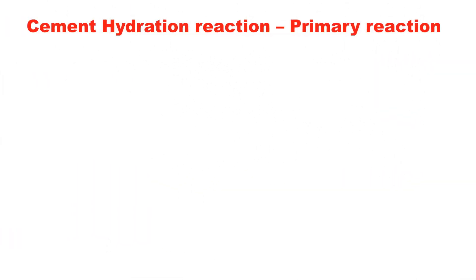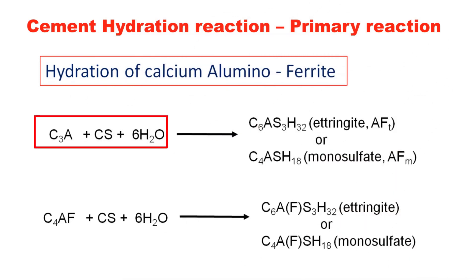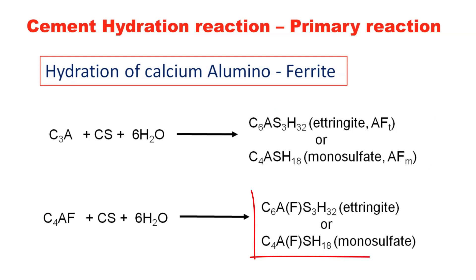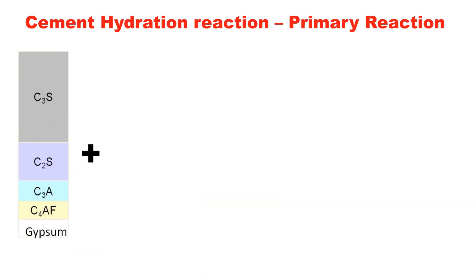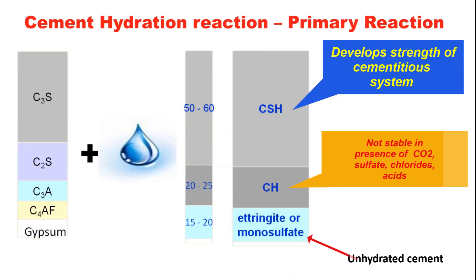For the aluminate components: C3A and calcium sulphate react with water to form ettringite or monosulphate. Similarly, C4AF and gypsum (calcium sulphate) react in the presence of water to form ettringite and monosulphate, with some iron-bearing hydration products. If ettringite forms in the fresh stage there is no problem, but if it forms after the concrete has hardened, it leads to cracking. Additionally, if monosulphate reacts with external sulphate later, it reforms ettringite and creates durability problems.